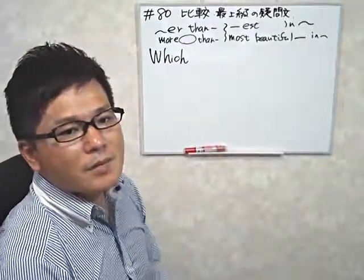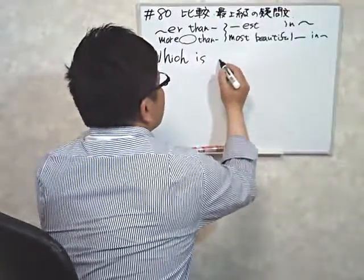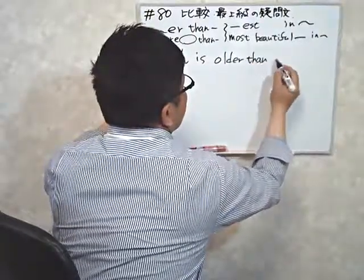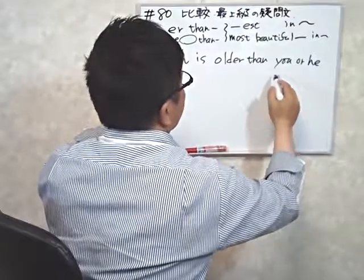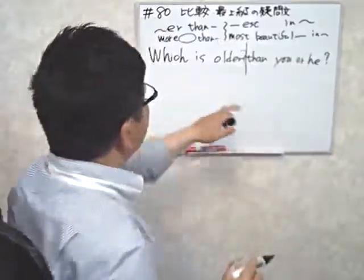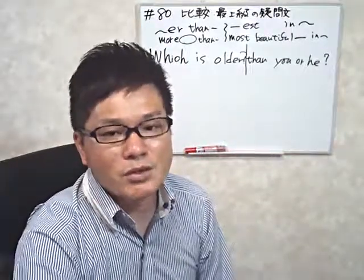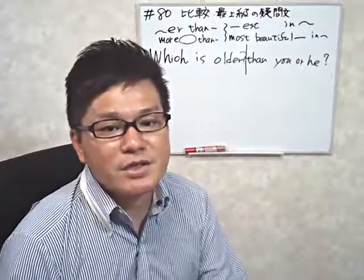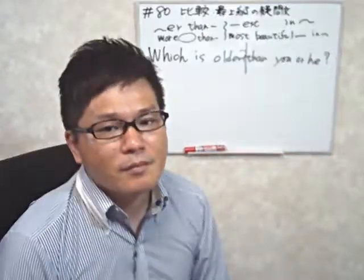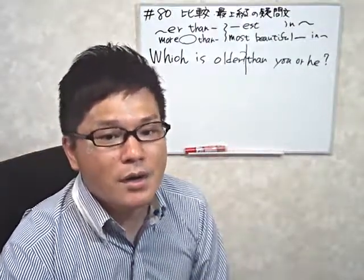例えば、2人の男性がいて年齢がわからないとき、「どっちの方が年上なの？」と聞きたいときは「Which is older?」と言います。2人を目の前にして言うなら短く「Which is older?」でOKです。1人がどこかに行ってしまった場合は「Which is older, you or he?」という形で聞くこともできます。